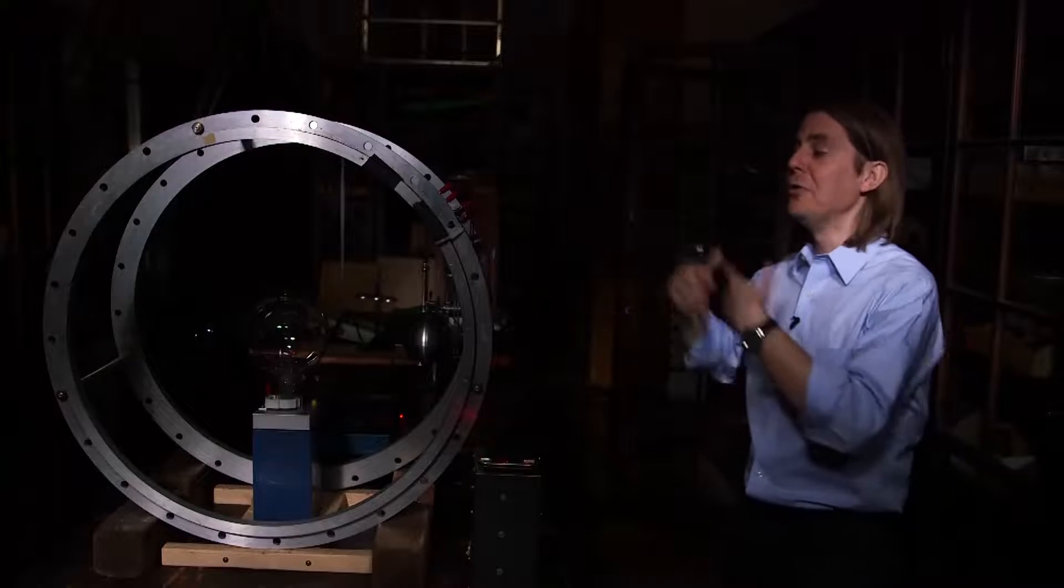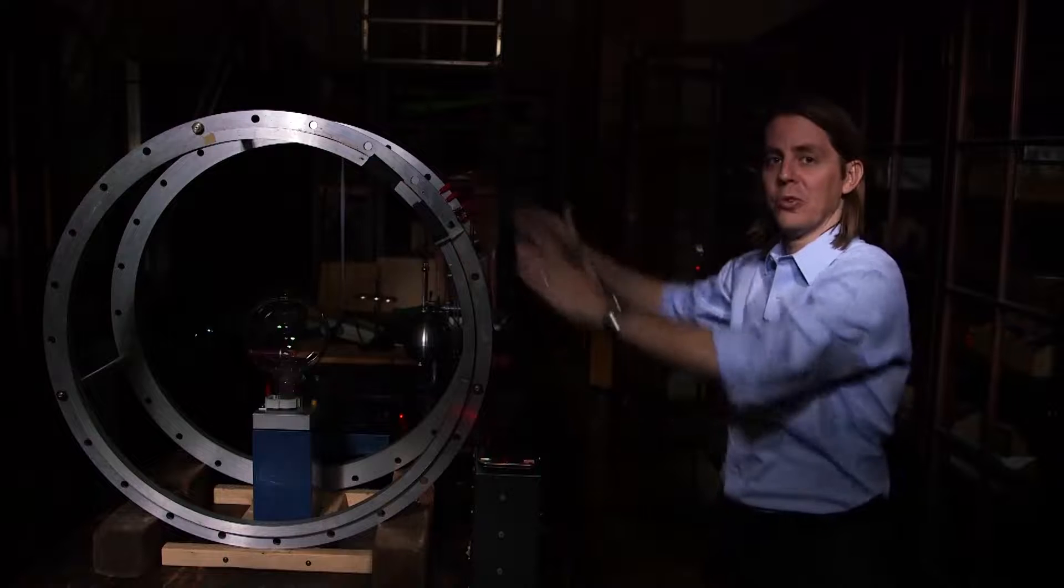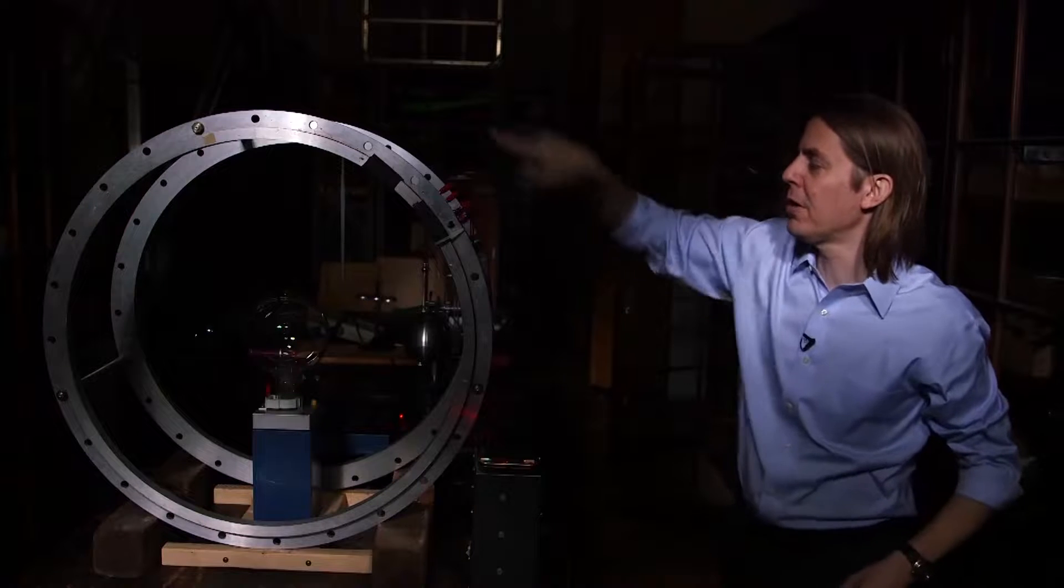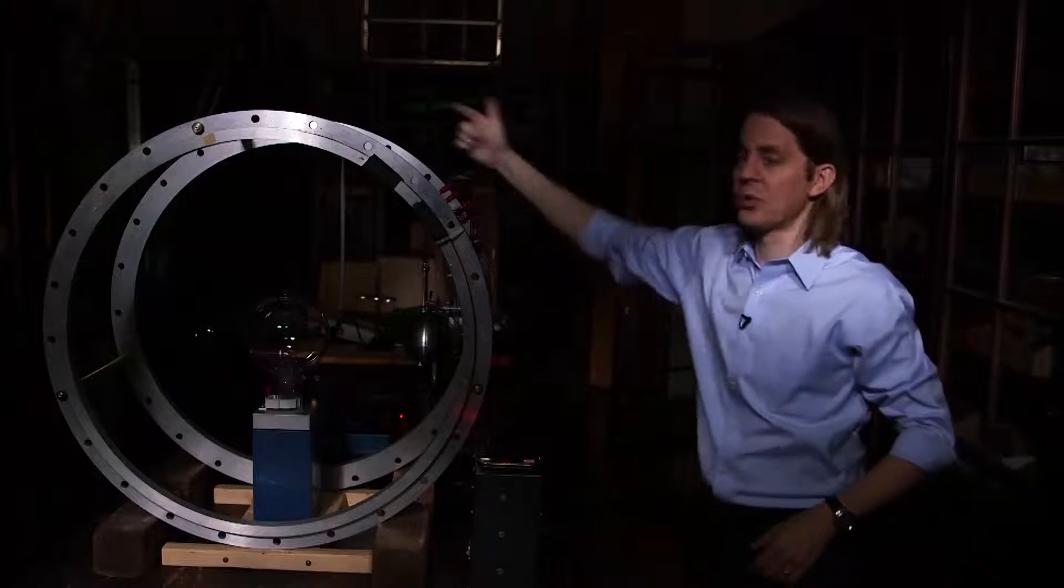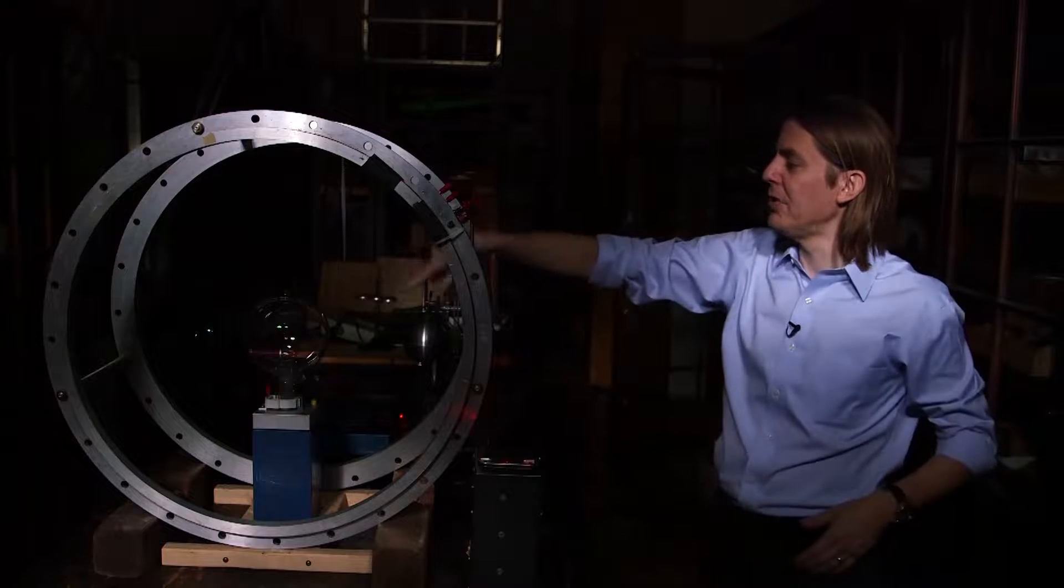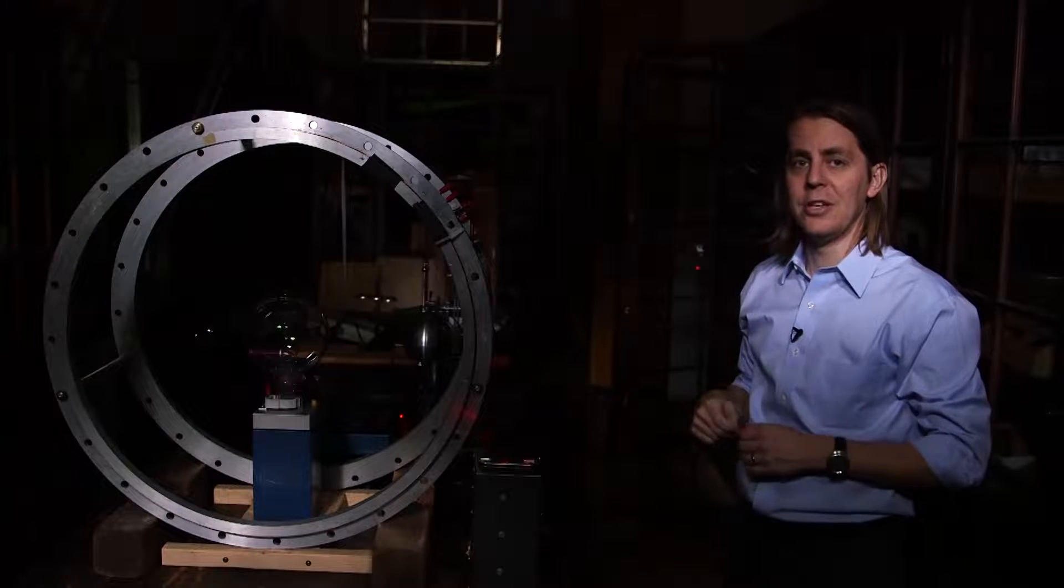What we're here to do is to create a uniform field and that's what these two big coils are. This is a large coil of wire on one side of the bulb, large coil on the other side. So if you put them together you can make a reasonably uniform magnetic field on the inside.